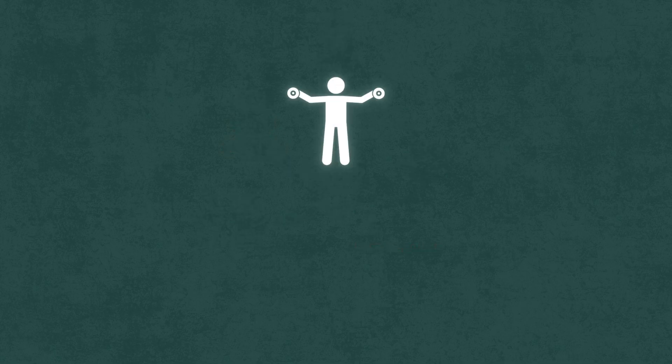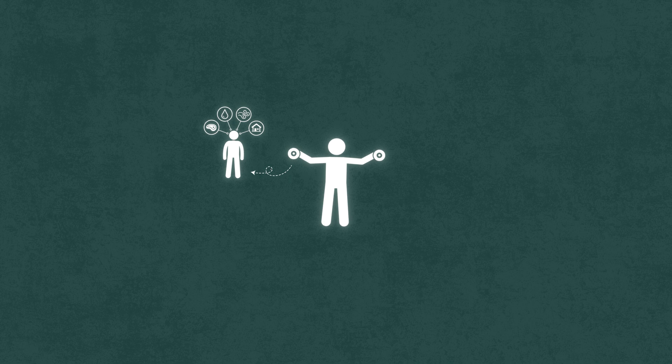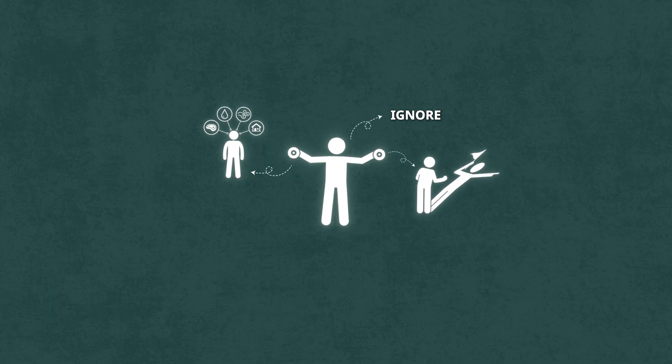So how do you actually train obsession in your daily life? It starts with one thing. Make your goal impossible to ignore. Obsession doesn't begin with willpower. It begins with environment design. Here's how.